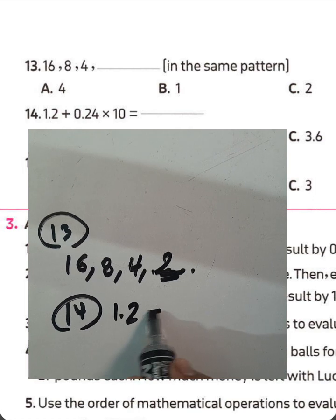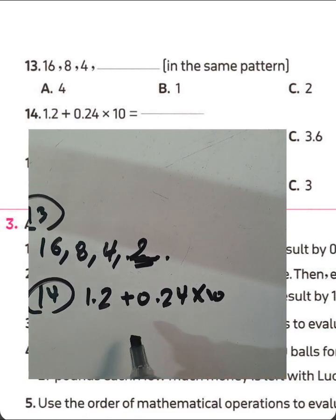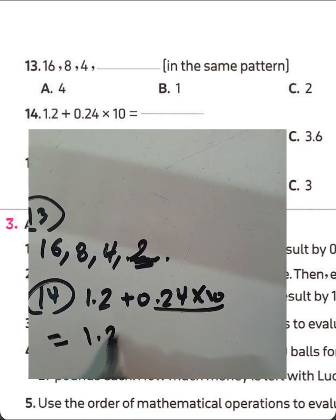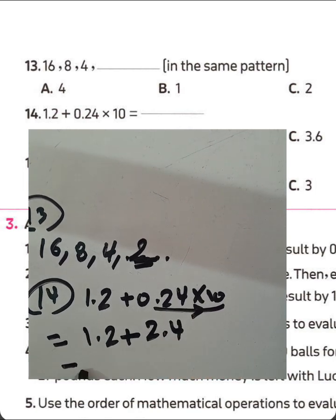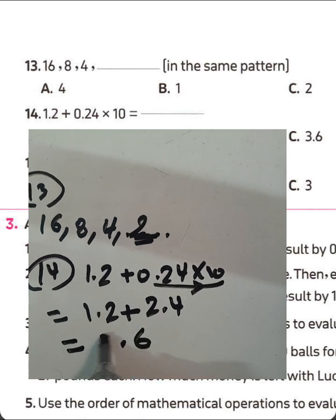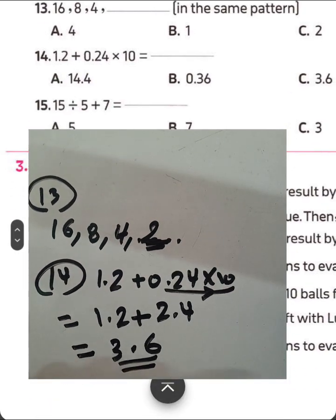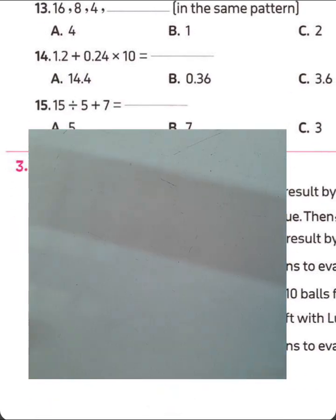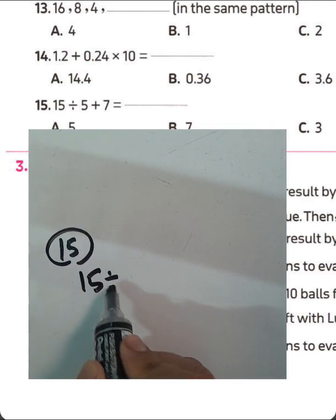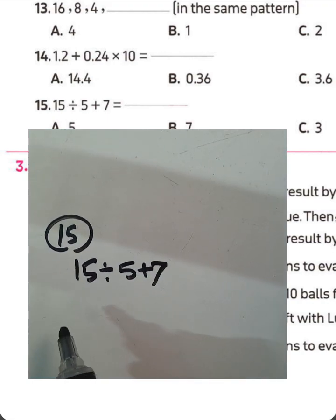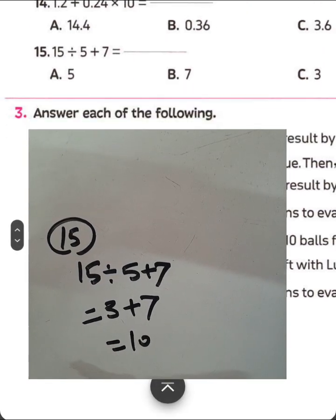Question 14: 1.2 plus 0.24 multiplication by 10. Multiplication first — move the point right by one digit: 0.24×10=2.4. Then 1.2 plus 2.4: 4+2=6 tenths, 2+1=3 ones. The result is 3.6. Question 15: 15 divided by 5 plus 7. 15÷5=3, 3+7=10. The result is 10.